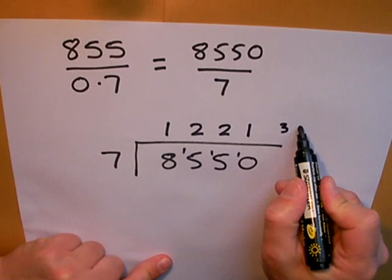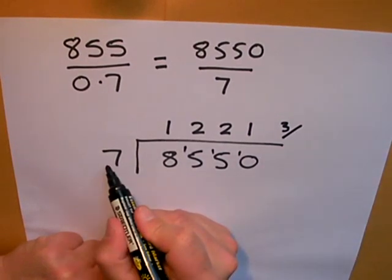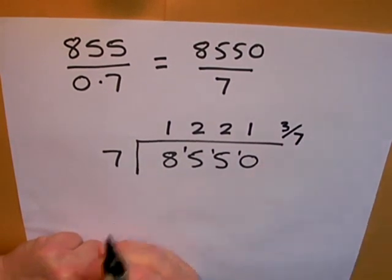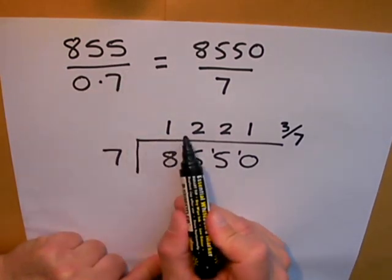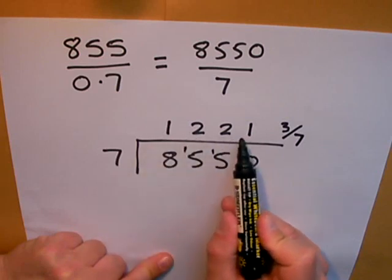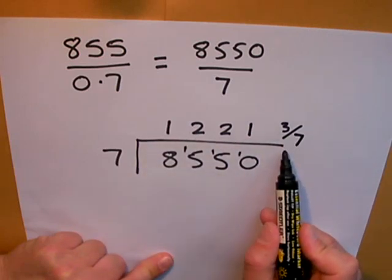Or I can say 3 divided by 7, because we divided by 7, it's 3 sevenths. So 855 divided by 0.7 is exactly the same answer: 1221 and 3 sevenths.